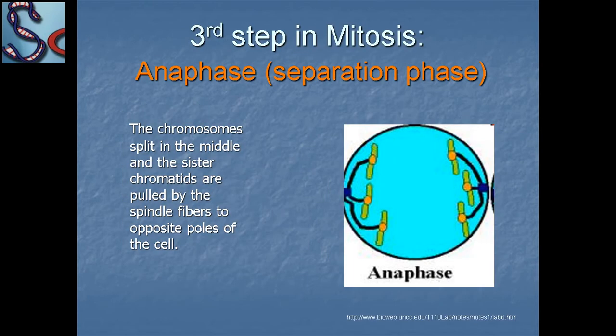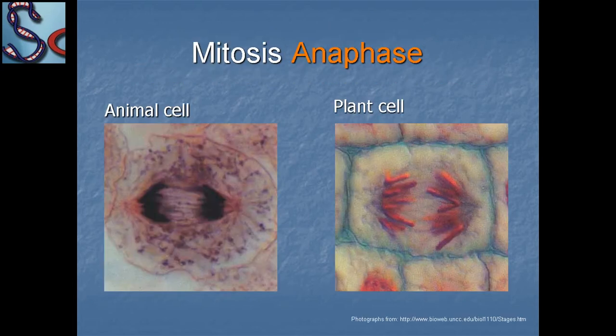The third phase is anaphase, the separation phase. The chromosomes split in the middle and the sister chromatids are pulled by the spindle fibers to opposite poles of the cell.